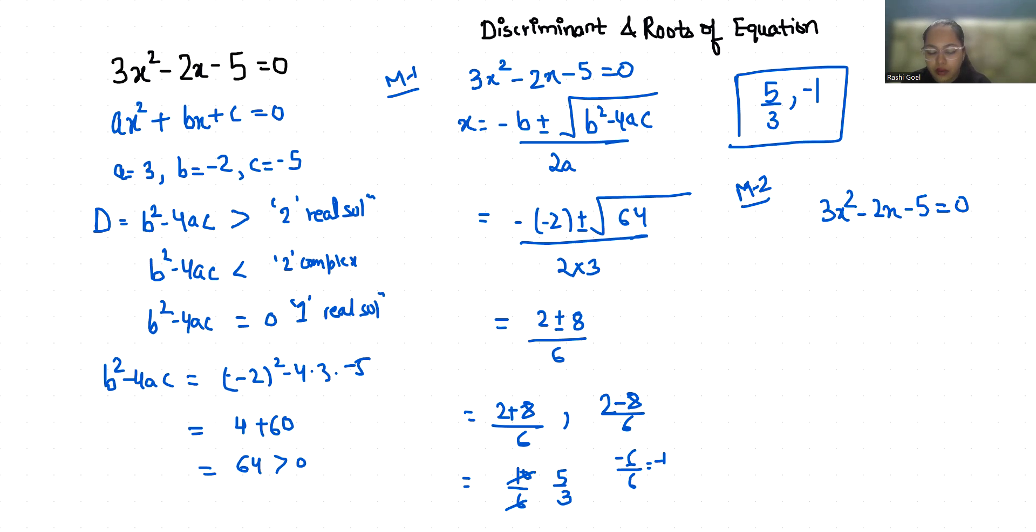This negative 2x I can write as plus 3x minus 5x minus 5 equals 0. From the first two terms, if 3x is common, we get x plus 1, and if minus 5 is common from the last two terms, we get x plus 1 equals 0.